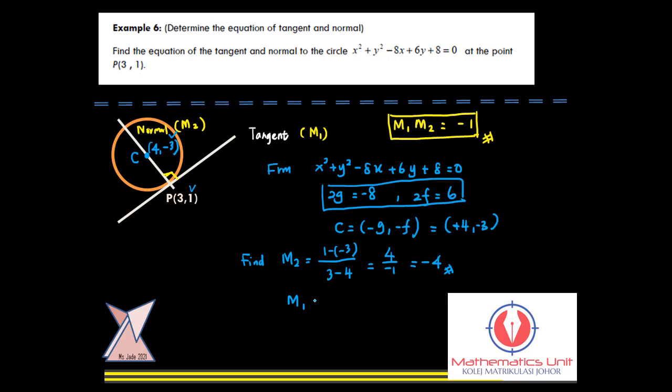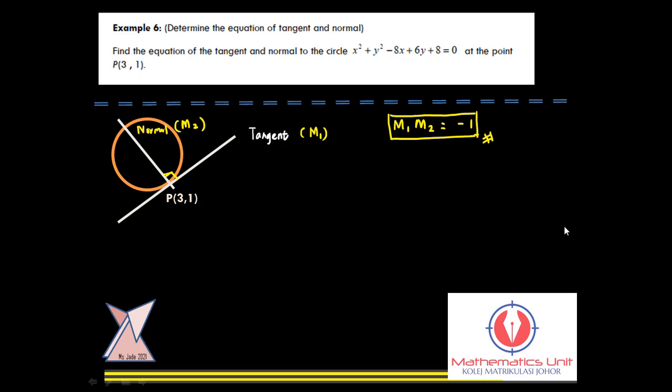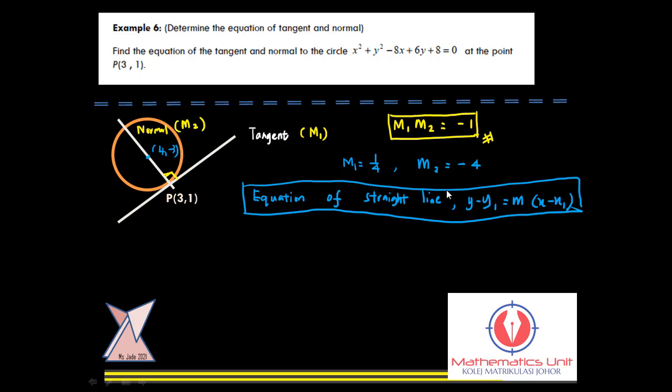Automatically, the gradient of tangent will be positive 1/4. After we have the two gradients for both tangent and normal, we just have to think about what is the equation of straight line in general. Which is, you must have a given point (x1, y1). In this case, our x1, y1 is the point P. Because the point P is the intersection point between the tangent and normal. So we're just taking (3, 1) as x1, y1. And the m is represented by tangent and normal respectively.